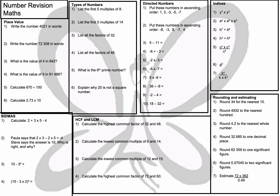We will start with place value. Question number one: write the number 4021 in words. In words it is FOUR THOUSAND and 21, so TWENTY ONE. That's writing that figure and that number in words.